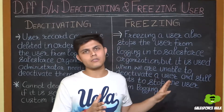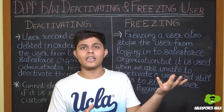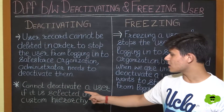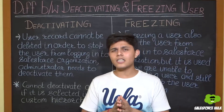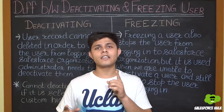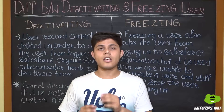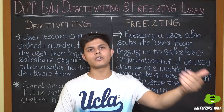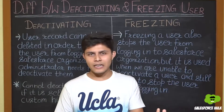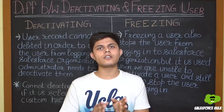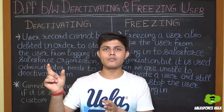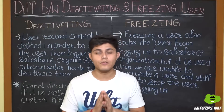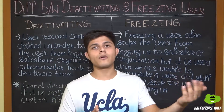One situation in which we cannot immediately deactivate an account: a user cannot be deactivated if they are selected in a custom hierarchy field. In that situation, we will first have to freeze that user so they cannot log in to our Salesforce org. After freezing the user, we will have to perform some steps to remove that user from the custom hierarchy field, and then we can deactivate the user, permanently removing their access from our Salesforce org.